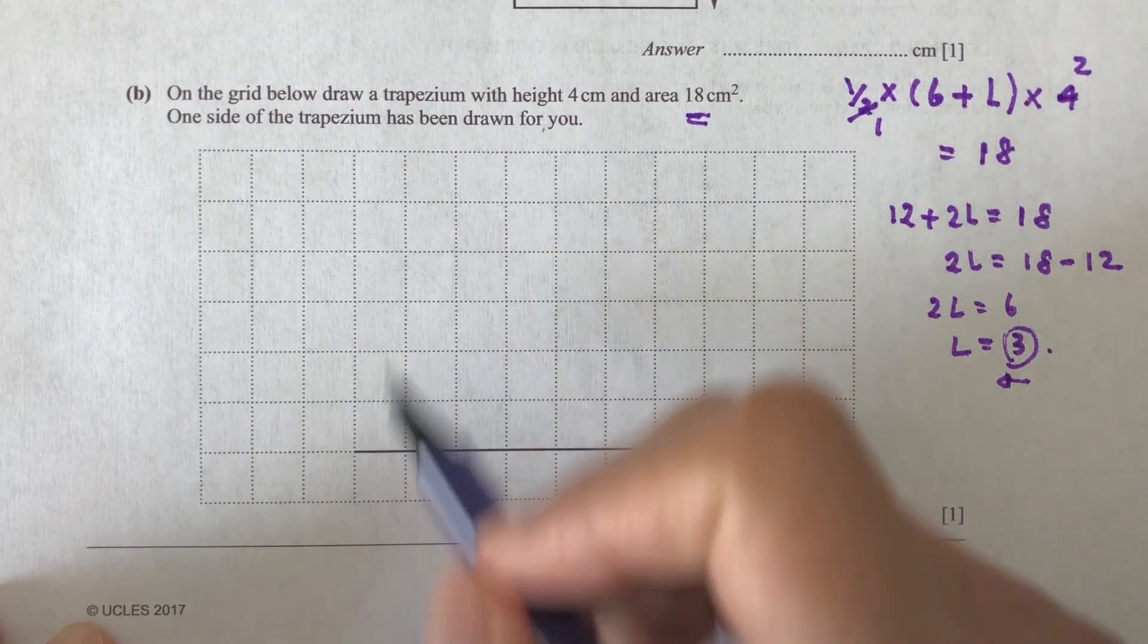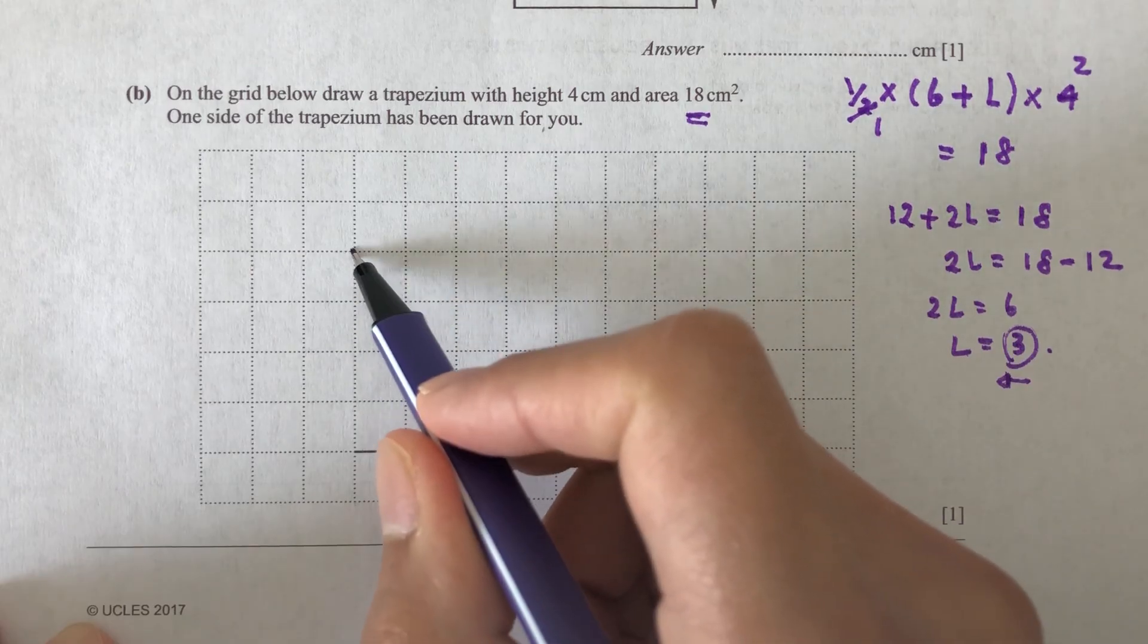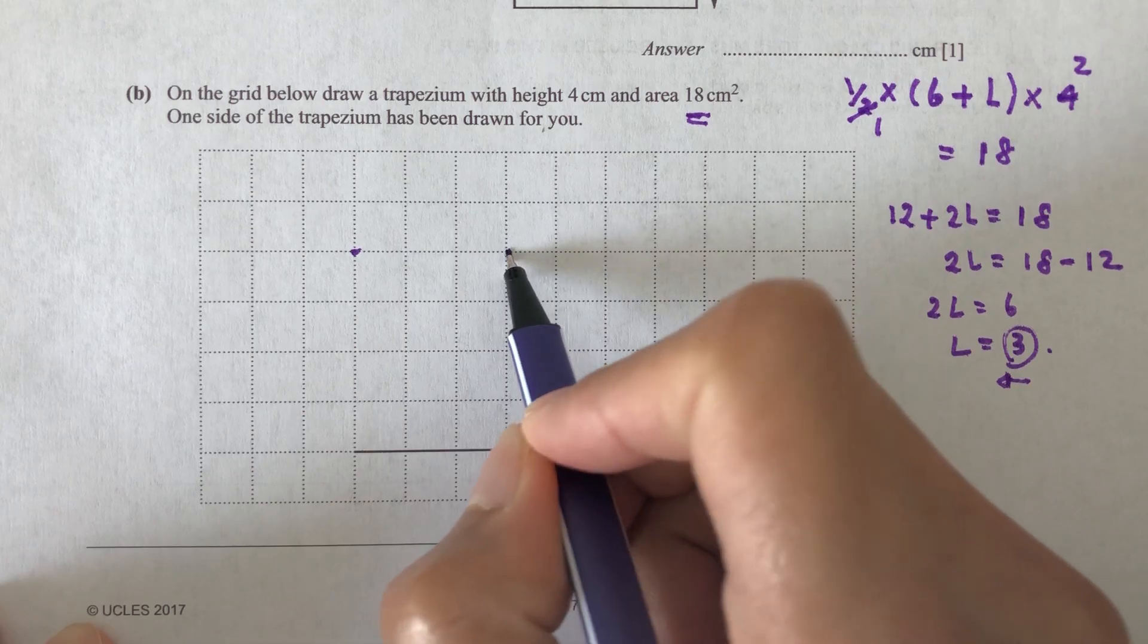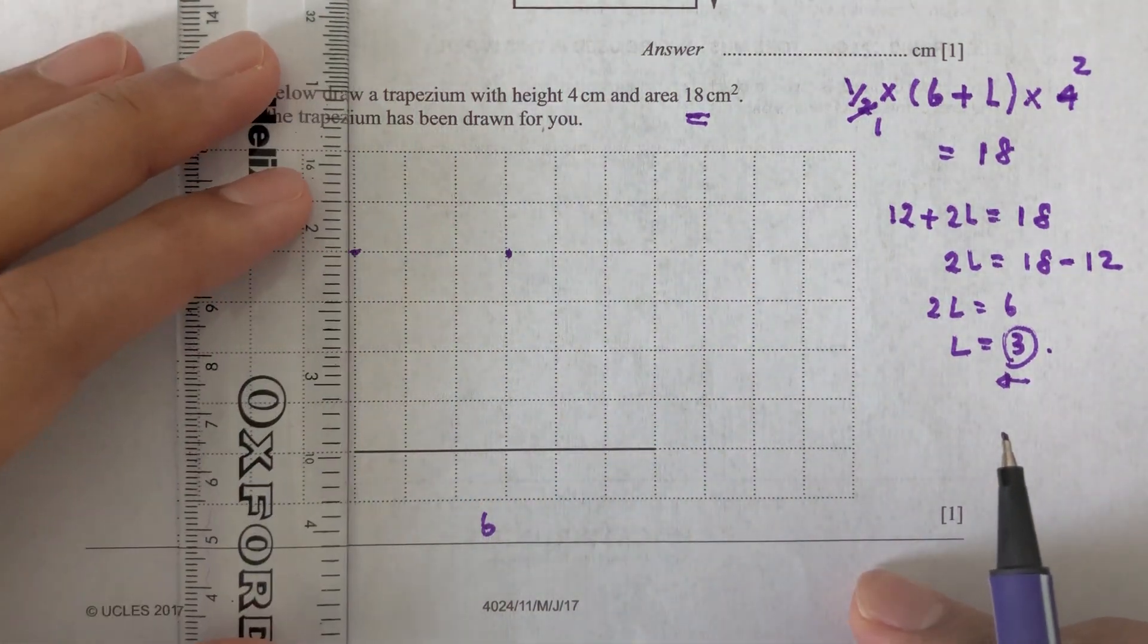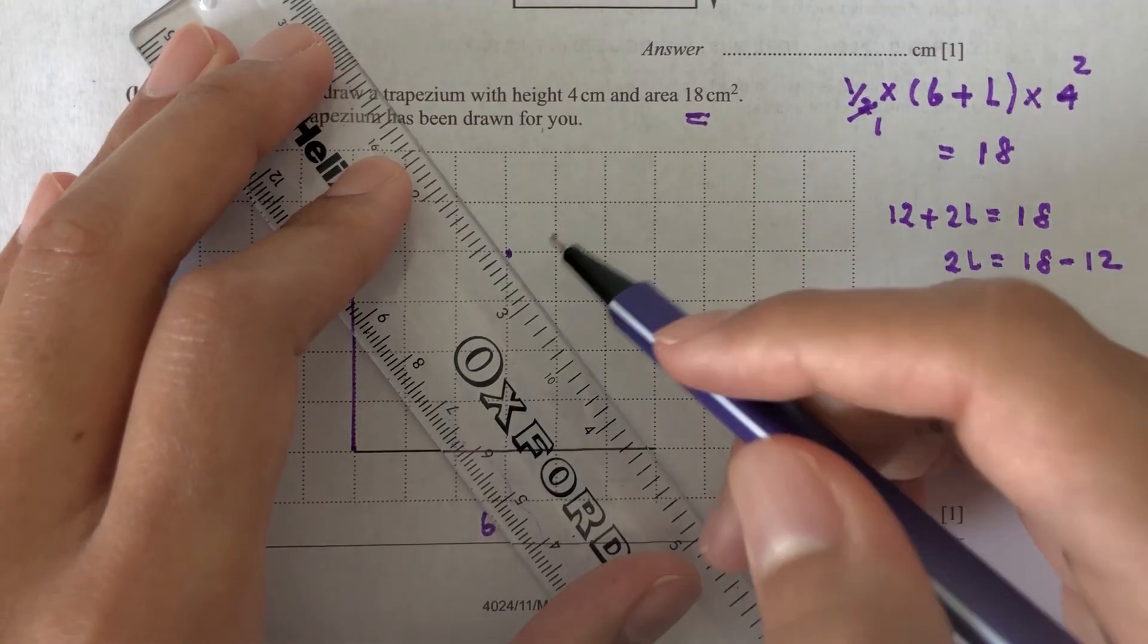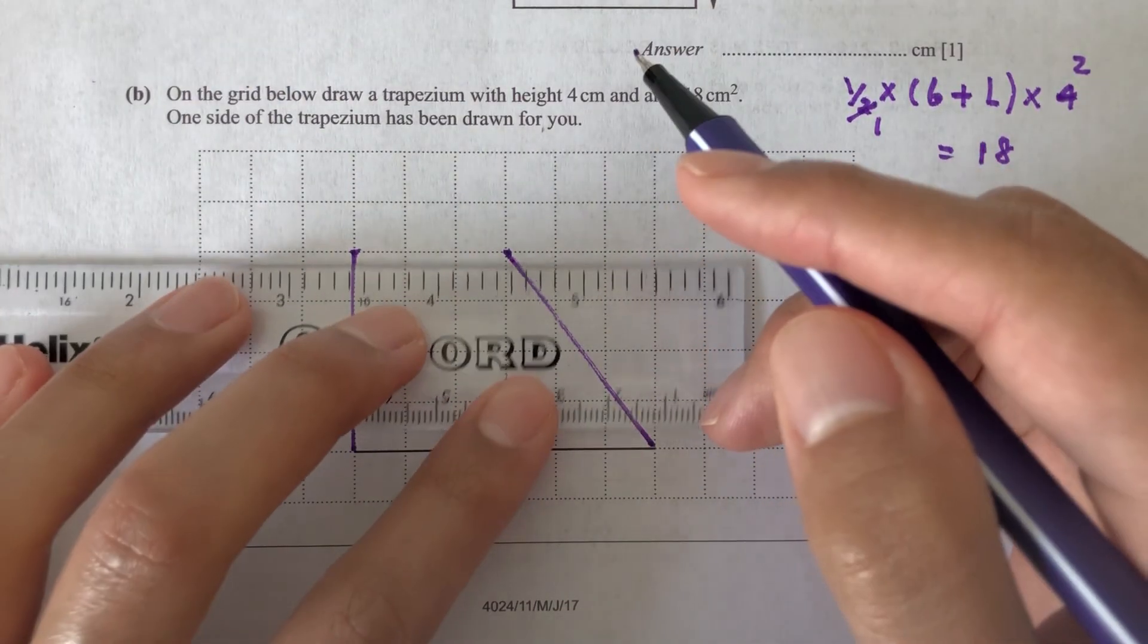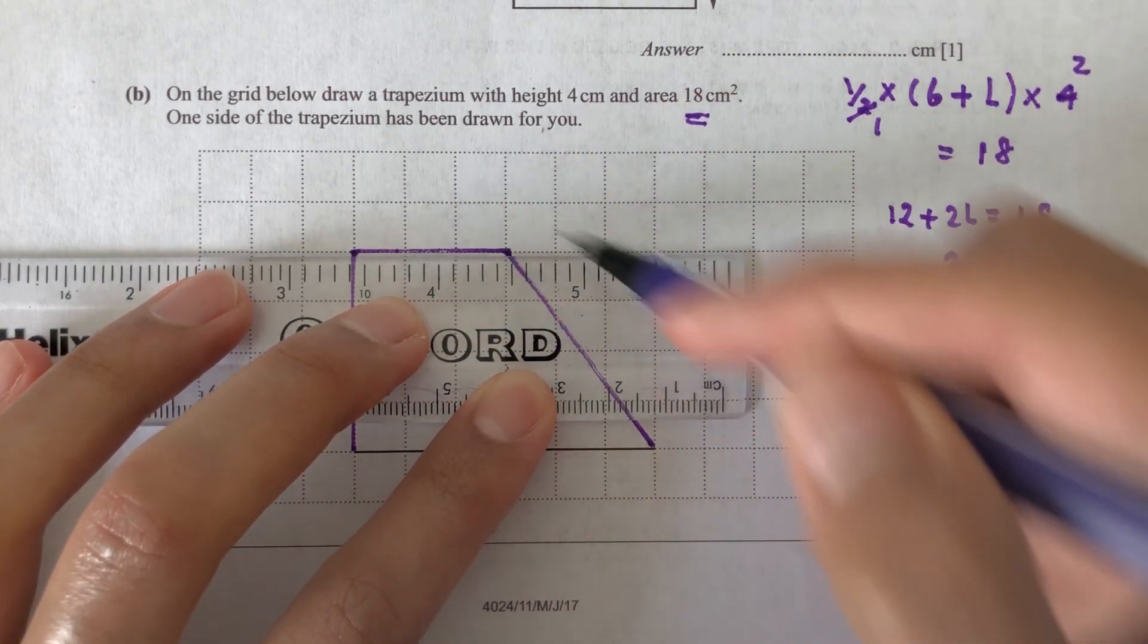So the length on the other side is 3. So we have to draw this on the diagram. So let's count. So the height is 4. So 1, 2, 3, 4. And 3: 1, 2, 3. Here we go. So now we just have to draw the points to have a trapezium. This will be on this side. And that's it for part B.